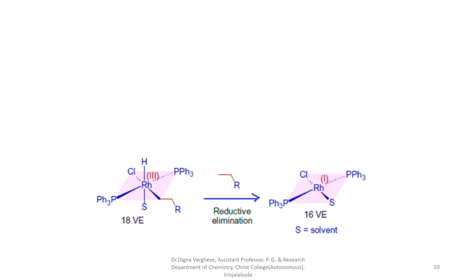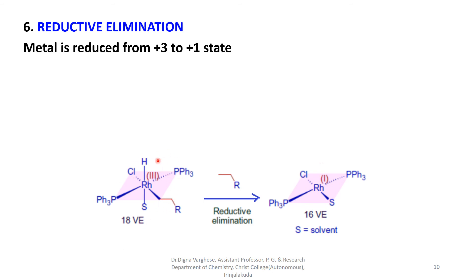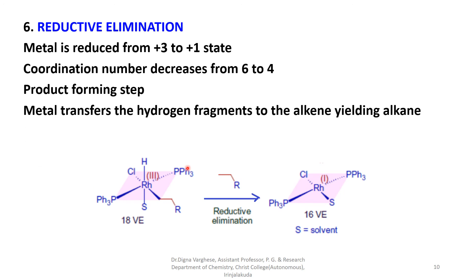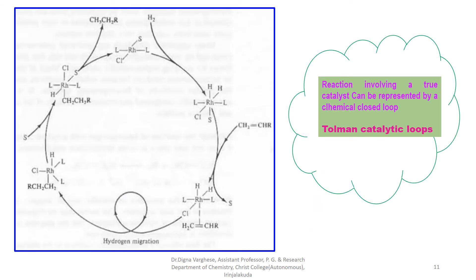This is the last step of the reaction — the reductive elimination step. Here, the metal is reduced from the plus 3 oxidation state to the plus 1 oxidation state, and the coordination number decreases from 6 to 4. It is the product-forming step. The saturated compound is eliminated from the 18-valence electron complex. The metal transfers the hydrogen fragments to the alkene yielding alkane, and here you can see the catalytic loop of the hydrogenation reaction using Wilkinson catalyst.